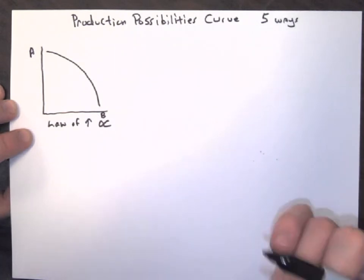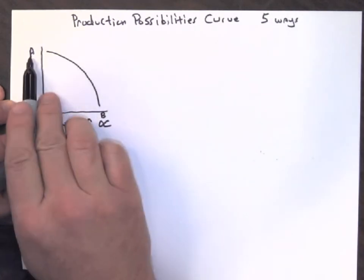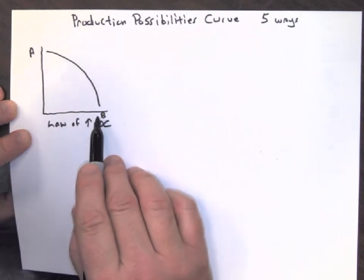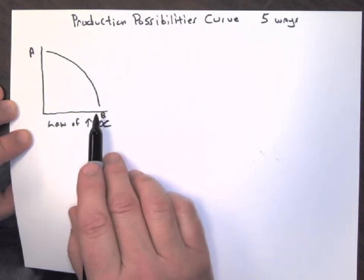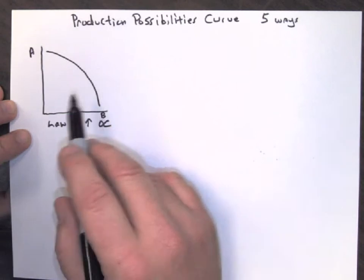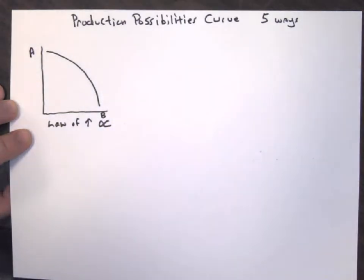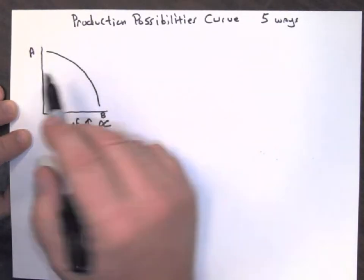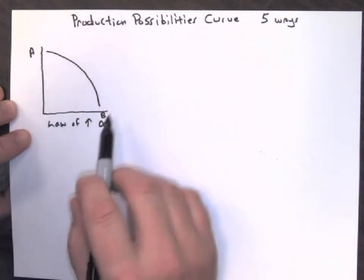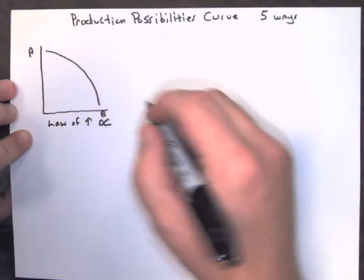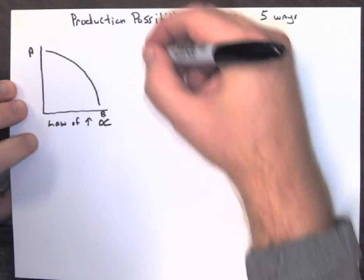Opportunity cost means every time I want more of item A, I have to give up some of item B — that's our trade-off. The law of increasing opportunity cost makes this curve bow outward because all resources are not as well suited to make all goods and services. Every time I choose to make one of item A, I give up the chance to make more and more of item B, so it's not a one-to-one trade-off. That's why the curve bows out — that's the most common one.